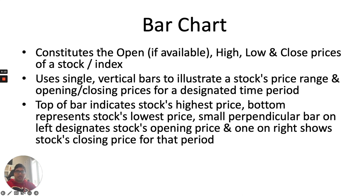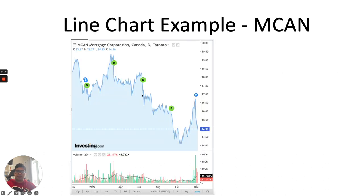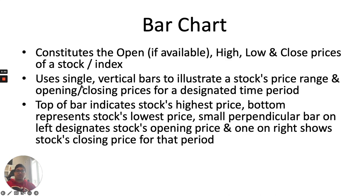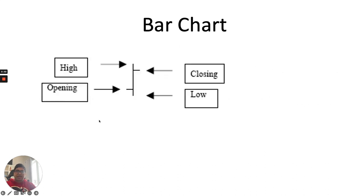The second type is the bar chart. It constitutes the open, high, low and close prices of stocks or an index, using single vertical bars to represent the stock price. To build on the comparison: a line chart only shows you the closing price — it doesn't show any other information. A bar chart has more information because it shows opening, closing, high and low.